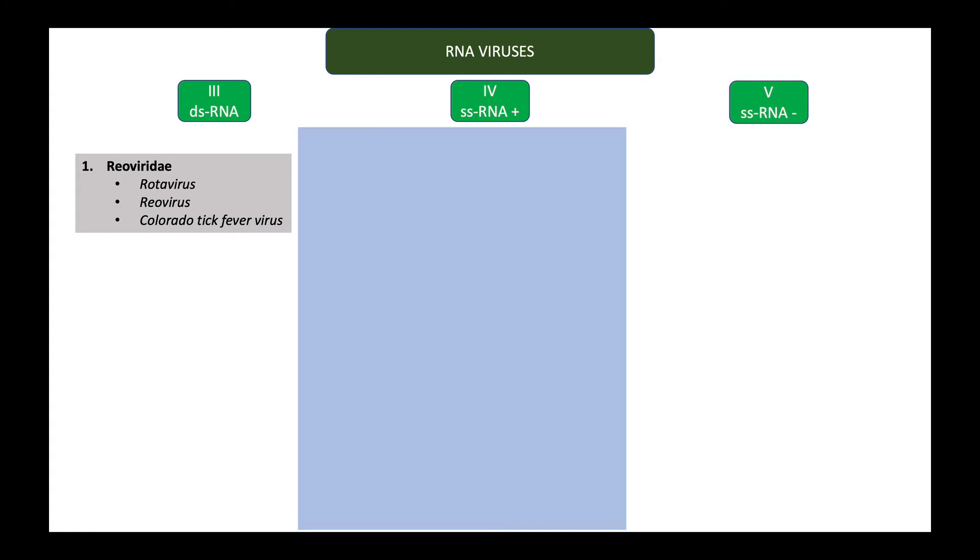Class four is a big group of important pathogenic viruses. First, we have the Picornaviridae family. Under this, we have polio virus, coxsackie virus, entero virus, rhino virus, and hepatitis A virus.